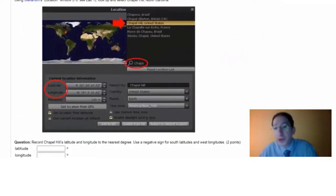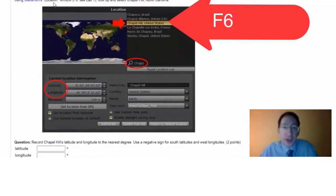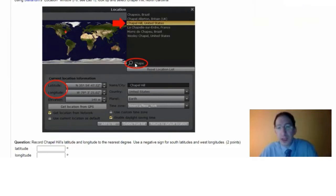I want you to open up Stellarium and go to the location window, which you can bring up by pressing F6, and you're going to look up Chapel Hill, North Carolina, which is the home of Skynet headquarters. Once you've entered a few letters, it should appear in the list, and you can select it, and that will bring up the latitude and longitude of this location.